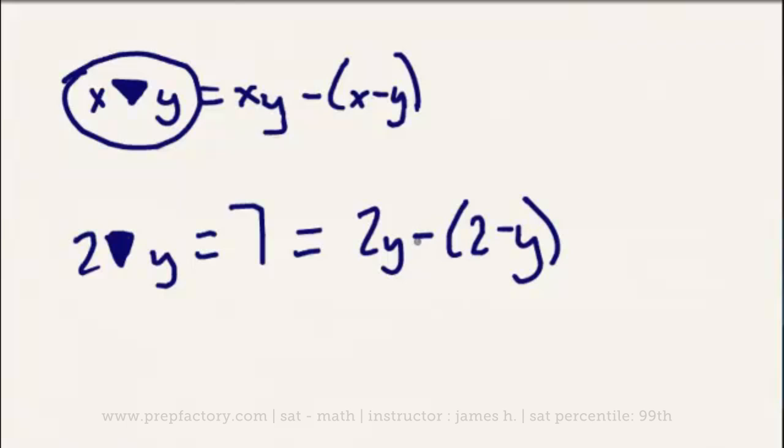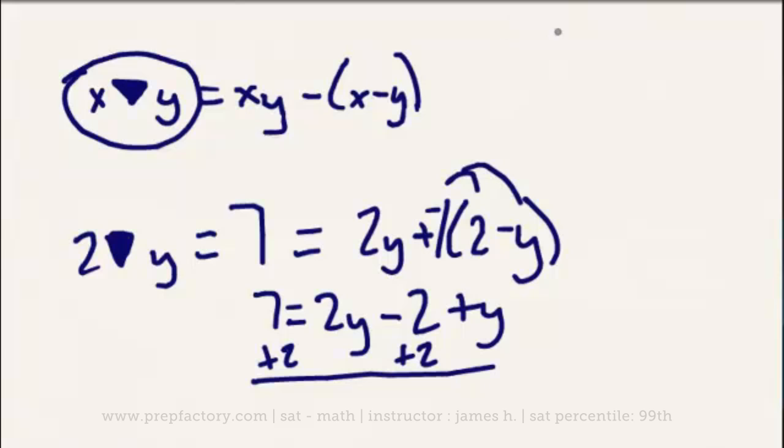So now all we basically have to do is solve this single variable equation. First thing we're going to need to do is distribute. The first thing we're going to do is make this plus a negative 1, because there's always an implied 1 outside of any parentheses, which you would then distribute. But since it was minus here, we're going to make that plus a negative 1, which we're going to distribute to both of these. So then we know that 7 equals 2y minus 2, and then our negatives cancel here, so plus y. So if we add 2 to both sides, we're going to then be left with 3y equals 9. Divide both sides by 3. And very simply, our final answer is, when x equals 2 in this scenario, and the operation 2 triangle y equals 7, y is going to equal 3.